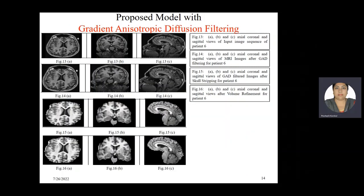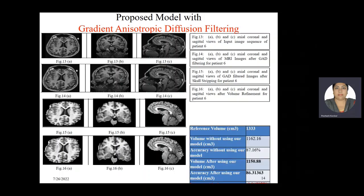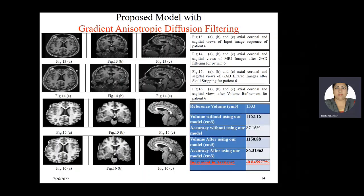The same model is tested with GAD filtering, that is gradient anisotropic diffusion filtering. The first row is input images, the second row is after applying GAD filtering, the third row is after brain extraction, and the last row is after volume enhancement. The reference volume and baseline accuracy without the model are the same as the earlier slide. When the proposed model with GAD filtering is applied, the volume value becomes 1150.88 cm³ and accuracy becomes 86.31%, meaning there is no increment — the accuracy value is actually reduced. This means the proposed model with GAD filtering is not giving good results for this dataset.